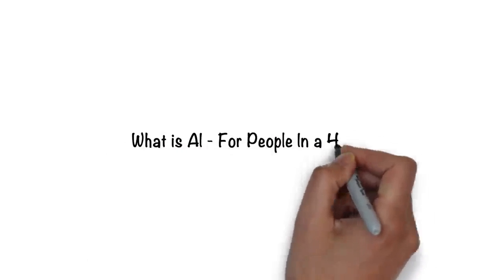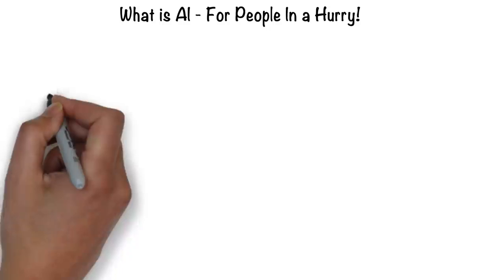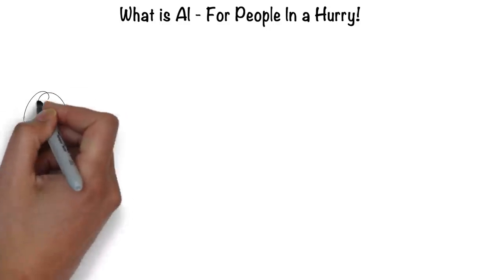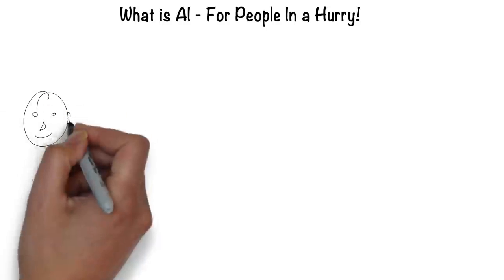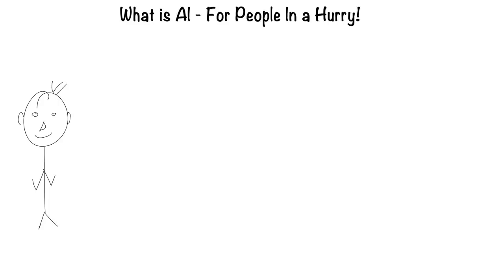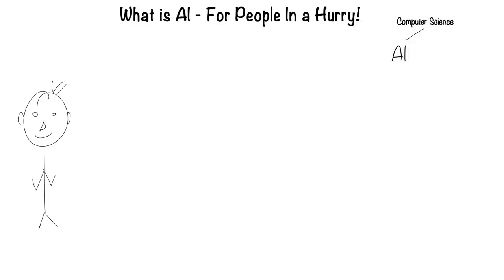Artificial intelligence for people in a hurry. The easiest way to think about artificial intelligence is in the context of a human, since humans are the most intelligent creatures we know of. AI is a broad branch of computer science, and the goal of AI is to create systems that can function intelligently and independently.